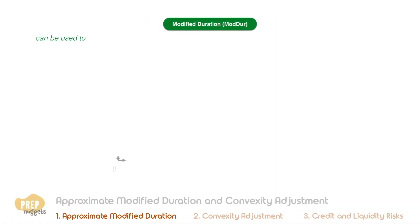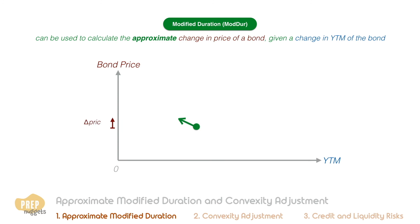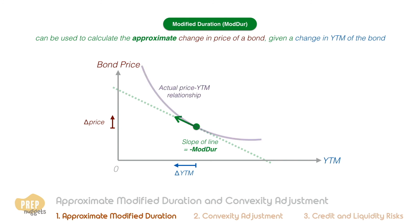In the last lesson we established that the modified duration can be used to calculate the approximate change in price of a bond given a change in yield. If we plot this graphically, the negative of the modified duration would be the slope of this straight line. The actual price to yield to maturity relationship, however, is not a straight line — rather it follows a convex curve. Instead of the long drawn method of weighing each cash flow to find the Macaulay duration and subsequently the modified duration, we can simply use an approximate method to find the slope of this line. We call this the approximate modified duration.